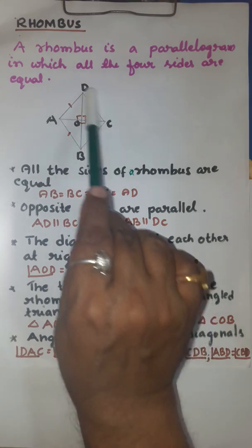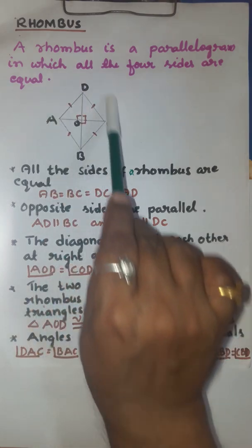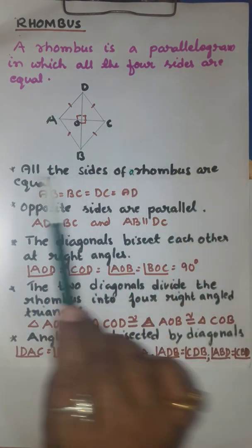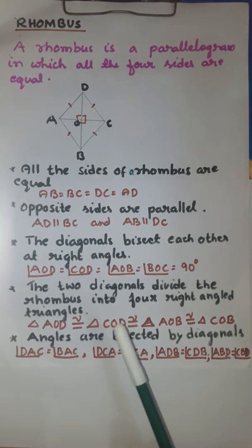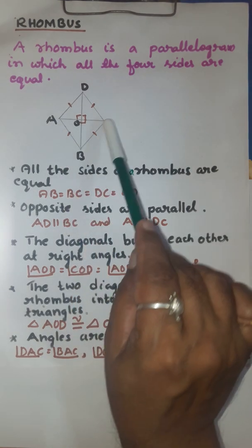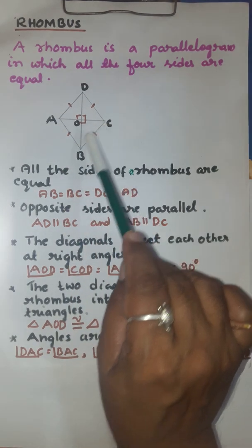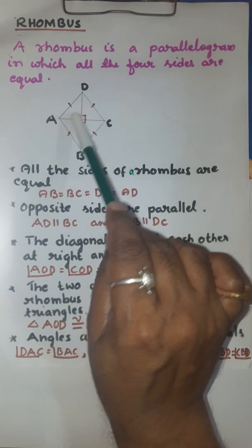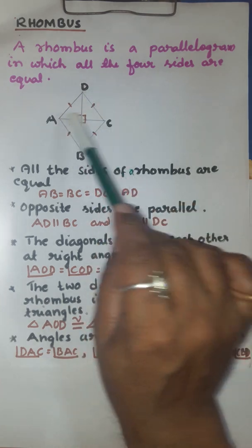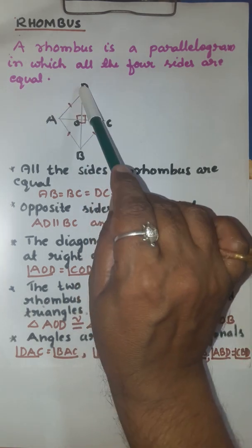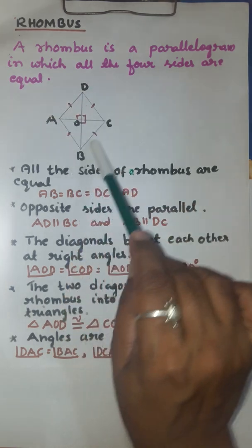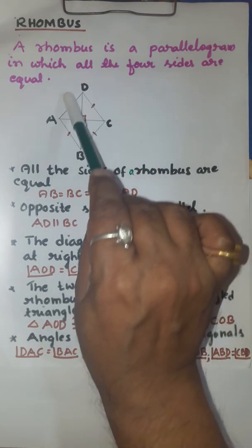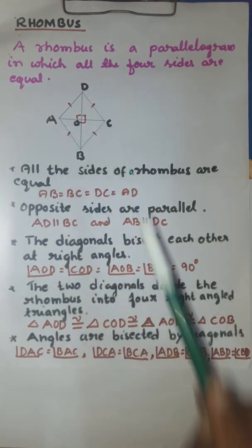Let us learn the important properties of a rhombus. All the sides of a rhombus are equal. Side AB is equal to side BC, side BC is equal to side DC, and side DC is equal to side AD. So all the sides are equal. This is an important property of the rhombus.